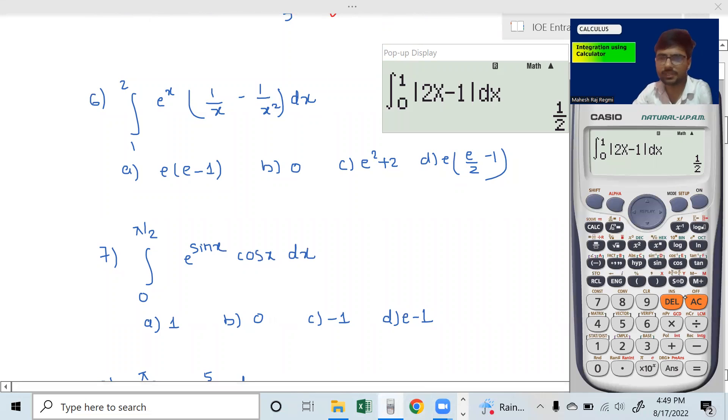Question number 6: integration of e to the power. Shift LN gives e to the pi. E to the power alpha x, one by x. One divided by alpha x minus 1 by x squared equals one divided by alpha x squared.